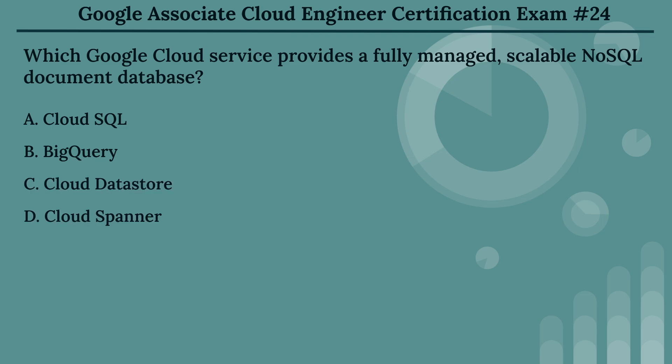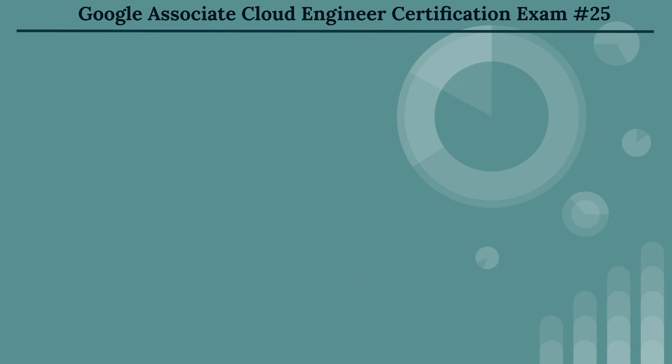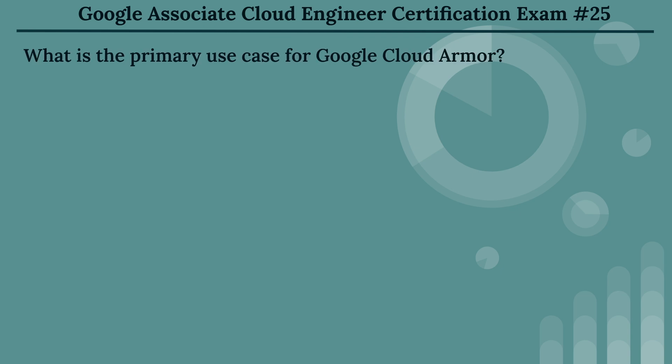The right answer is Option C: Cloud Datastore. Google Cloud Datastore is a fully managed, scalable NoSQL document database. It is designed for building highly available and scalable applications.